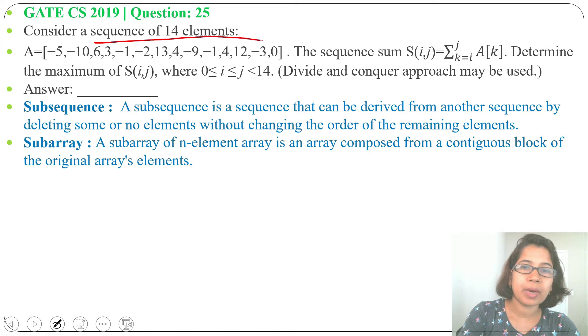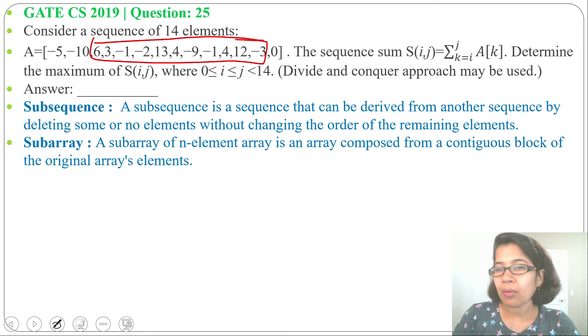So this is a subarray. It should be contiguous, means no element should be missed from that, and it should be in sequence. In case of subsequence, it should be in sequence but not necessary contiguous. But in case of subarray, it should be contiguous.